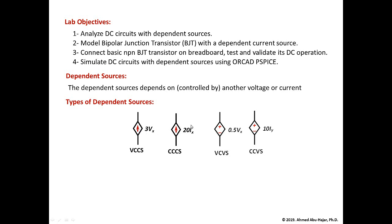Now, those dependent sources are models — they aren't actual circuits, they are models. For example, they can model sensors. A temperature sensor could be modeled as a current source controlled by temperature, where temperature is represented by Vx. Or they can be modeled as amplifiers, where this current source is a scalar multiplication of Vx. So those sources are used to model sensors and amplifiers.